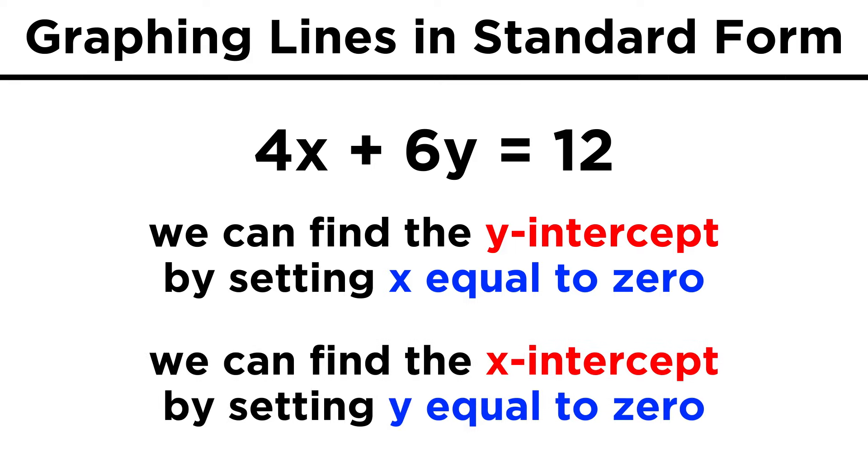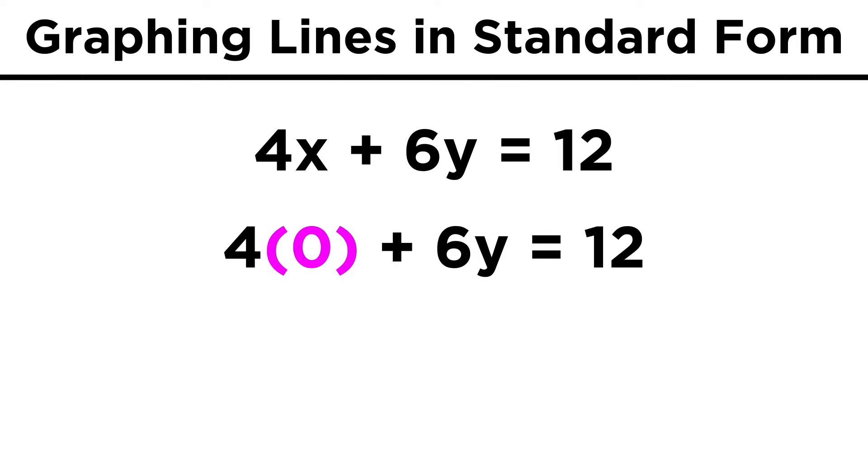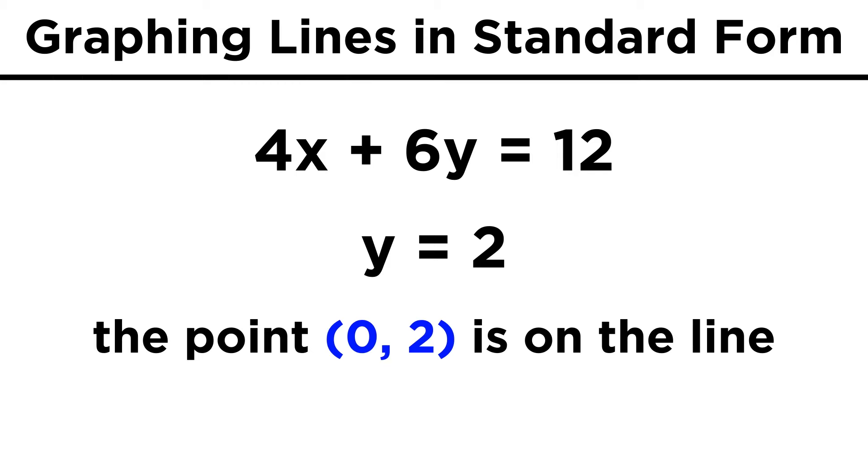Likewise the x-intercept, or the point where the line crosses the x axis, must have a y value of zero. For this reason, to find the y-intercept, we can just plug in zero for x. The x term will go away, six y equals twelve, so y equals two. That means the y-intercept is the point zero two.